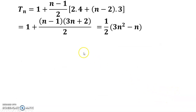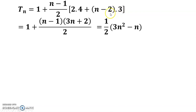Now I get Tn equals 1 + (n−1)·2 + (n−2)·3, because the series of differences is in AP form with first term 4 and common difference 3. Please write and check this value. Using the AP formula and simplifying gives (1/2)(3n² − n).